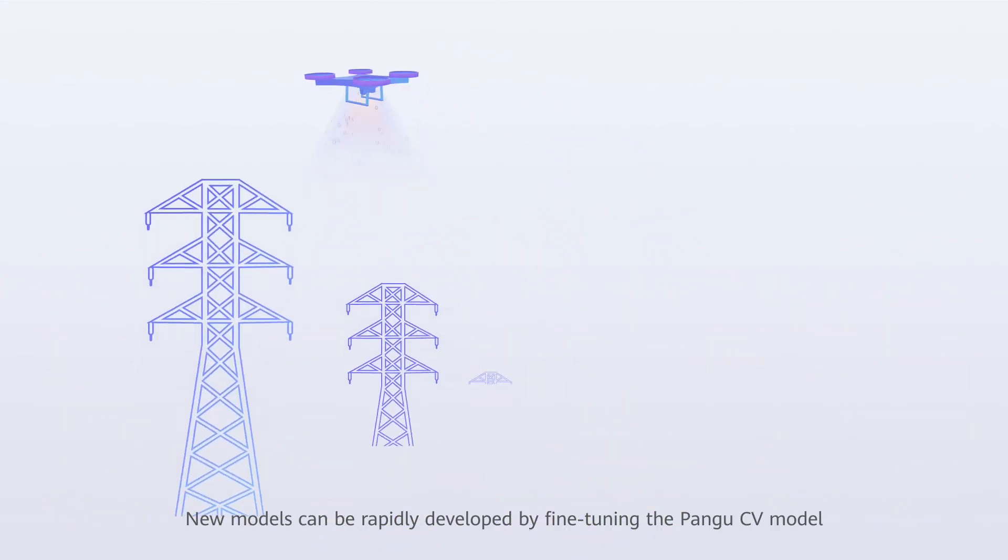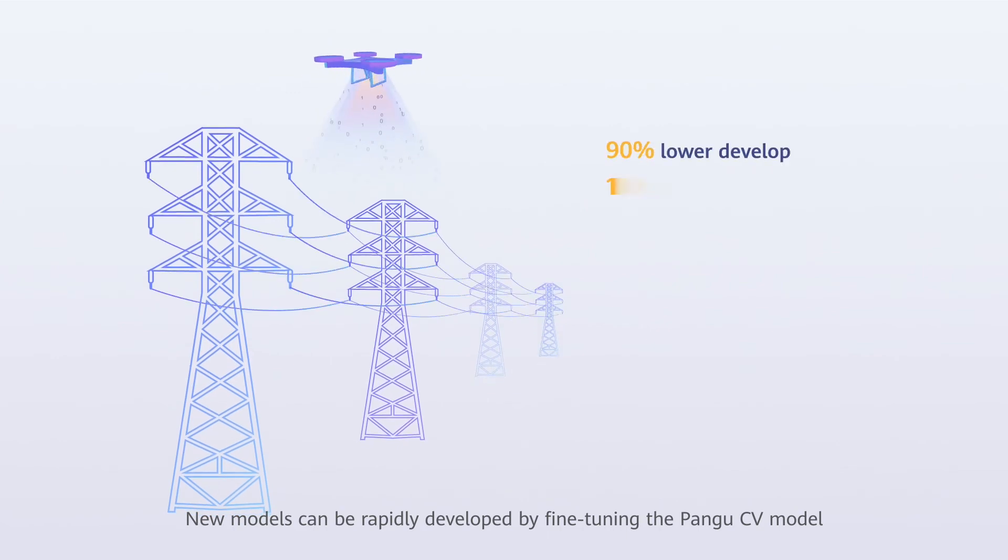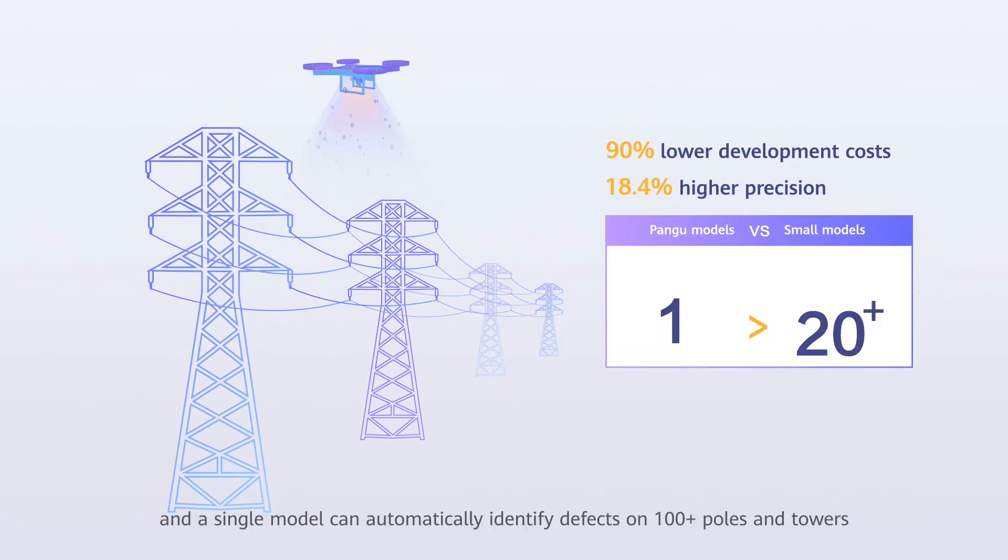New models can be rapidly developed by fine-tuning the Pangu CV model, and a single model can automatically identify defects on 100-plus poles and towers.